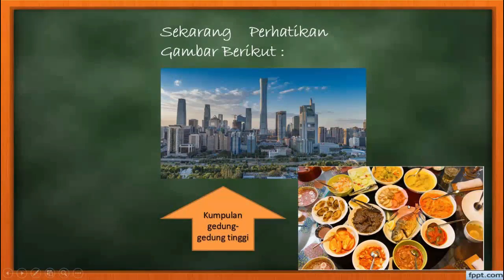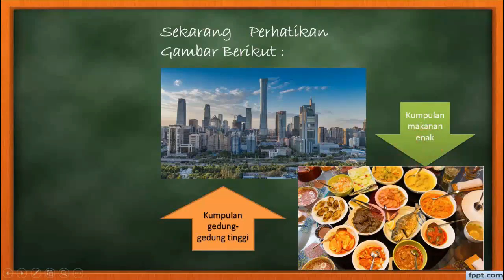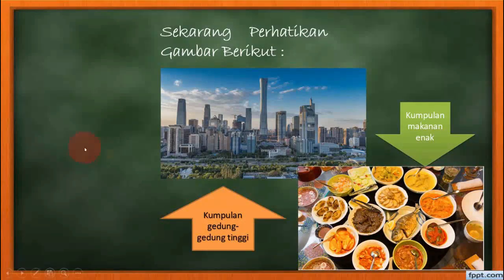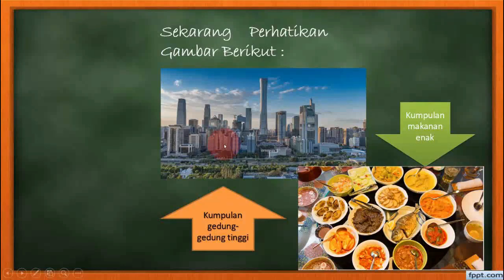Apakah bisa disebut kumpulan? Kemudian yang kedua, kumpulan makanan enak. Yang membedakan dia himpunan atau bukan himpunan adalah dari sifatnya. Tadi sayuran dan buah-buahan itu dapat kita kelompokkan dengan pengukuran dan dengan objek yang dapat didefinisikan dengan jelas. Artinya jelas, kalau seseorang menyebutkan apel, pasti yang lainnya juga akan menyebutkan apel — terukur dengan jelas.